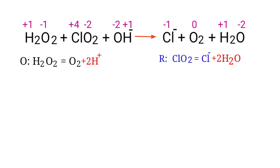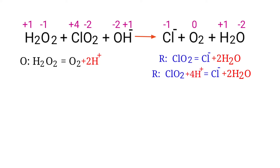The oxygen atoms are balanced. Now we need to balance the hydrogen atoms — to do this, you can produce H⁺ ions. The number of atoms are now balanced in the reduction half reaction.